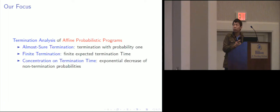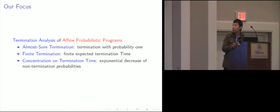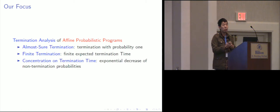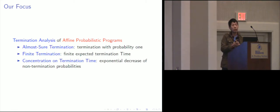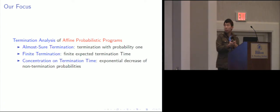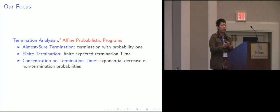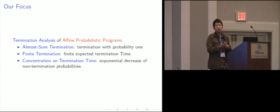By means of termination analysis, we consider three variants of this general scope. We consider the most basic one, which is called almost sure termination — this means that a program should terminate with probability one. Then we consider finite termination, which means that a program should terminate with finite expected termination time. Finally, we consider concentration on termination time, which means we find a threshold such that after this threshold, the probability that the program does not terminate decreases exponentially.